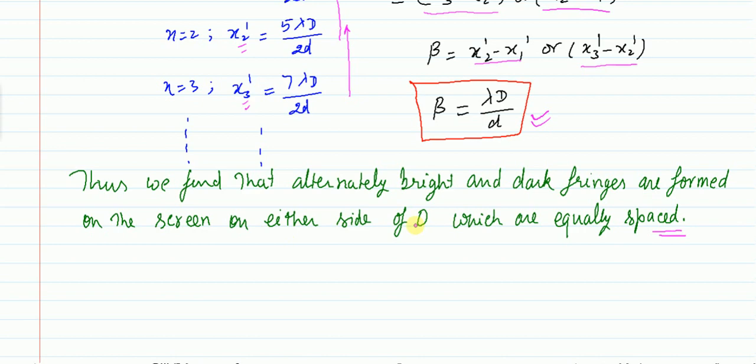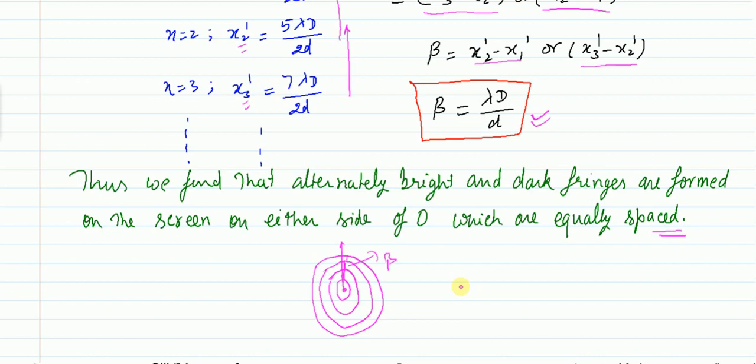We find that alternately bright and dark fringes are formed on the screen on either side of O, and they are equally spaced. The central maximum is at O, and going upward we have the first, second, third, and fourth fringes. The distance between any two consecutive fringes — whether bright or dark — is the fringe width beta, and it is constant. Beta equals λD/d.